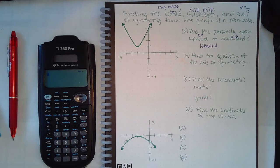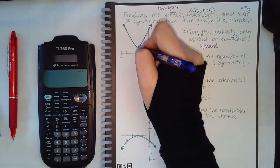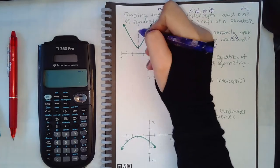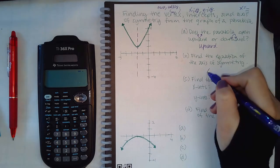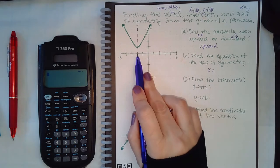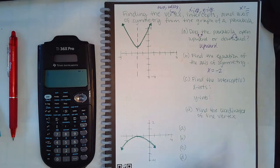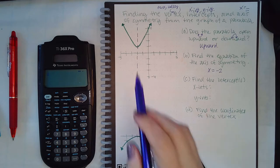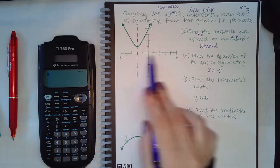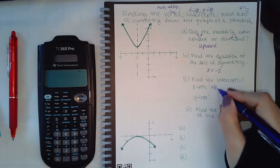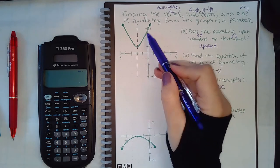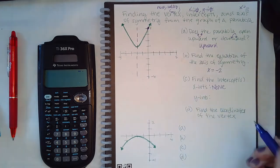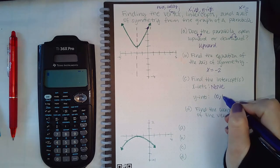Then it says find the equation of the axis of symmetry. This is the middle of the parabola — the axis of symmetry is this invisible line I've drawn in. The equation of that line is x equals whatever this x value is, which is negative 2. From the x-intercepts, notice that the graph does not touch the x-axis, so there are none. However, it does touch the y-axis here at 0, 4.